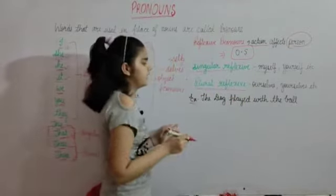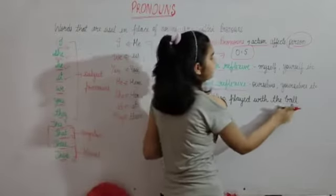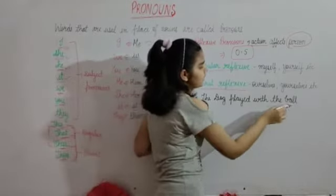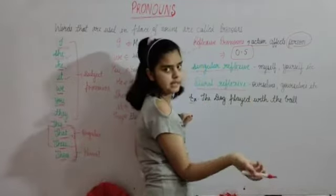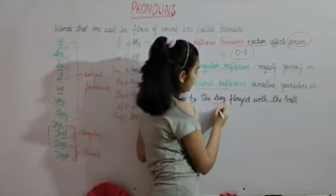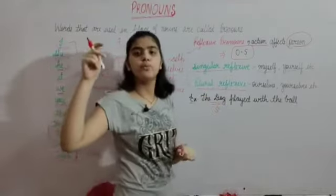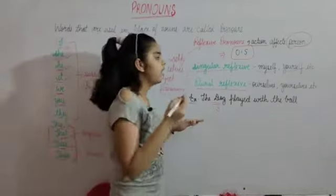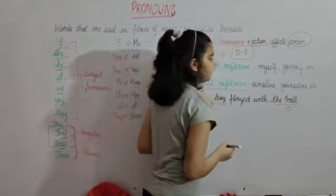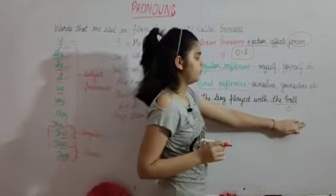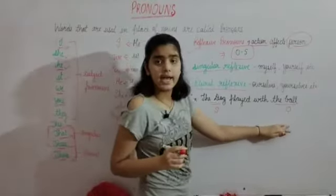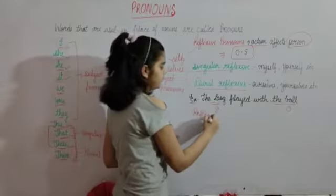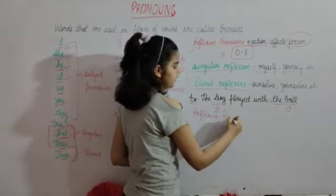Ek example hum log dekhte hain: The dog played with the ball. Yeh reflexive pronoun ka example hai kyunki isme jo dog hai, usko yeh action affect kar raha hai. Yahan pe jo dog hai, woh subject hai. Aur ball yahan pe object hai. Dog uska subject hoga, aur ball yeh object hai. Dog ko yeh action affect kar raha hai, isliye hum isse reflexive pronoun ka example kehenge.